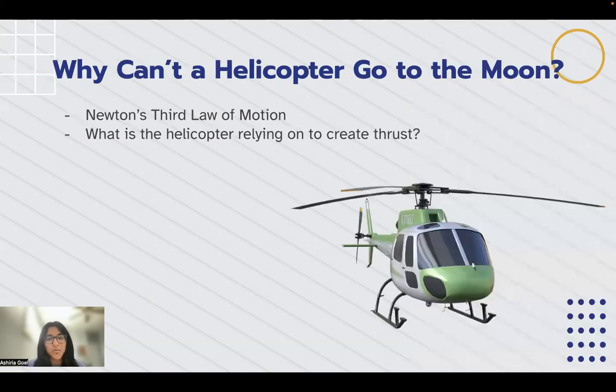So why can't a helicopter go to the moon? Well, in order to think about this, we have to think about what the helicopter is relying on to create thrust. The answer to this is that the helicopter is spinning its blades and pushing against the wind and the air to create thrust.